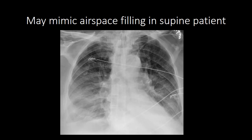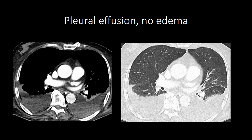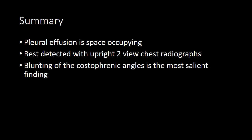This appearance of airspace opacity can be really due to a large pleural effusion, and I often see this type of appearance to the lungs mistaken as pulmonary edema. In summary, a pleural effusion is a space-occupying process where fluid, pus, or blood fill the potential space between the visceral and parietal pleura and cause compression of the adjacent lung. It's best detected with upright two-view chest radiographs, and on those chest radiographs, you're looking for blunting of the costophrenic angles, which in a normal person should be very sharp and angular.